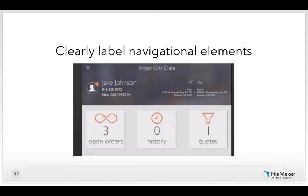When designing navigation elements, make them as clear as possible — providing well-differentiated navigation elements that tell users where they are, what they can do there, and where they can go. This interface from Angel City Data clearly differentiates: you can see you're on the current record of Jake Johnson, and you can see what you can do — three open orders, zero history orders, and one quote.